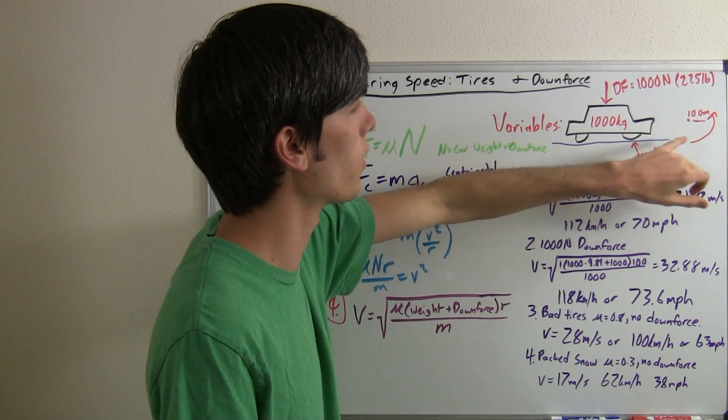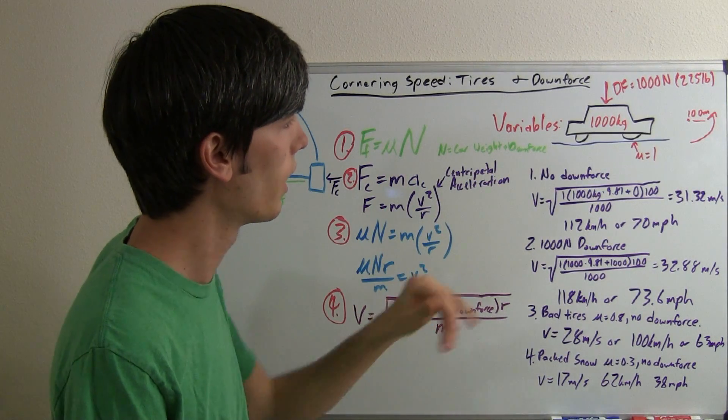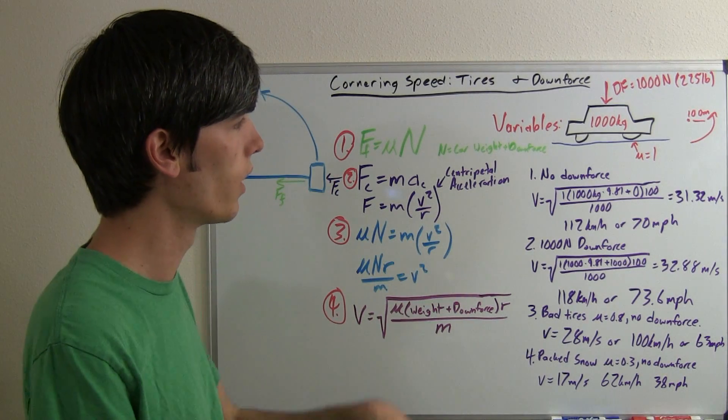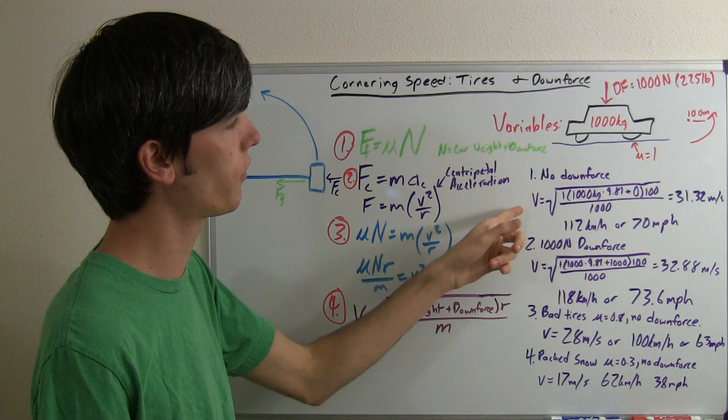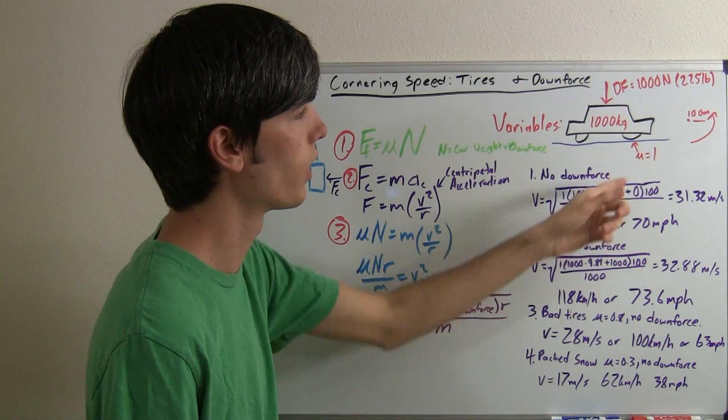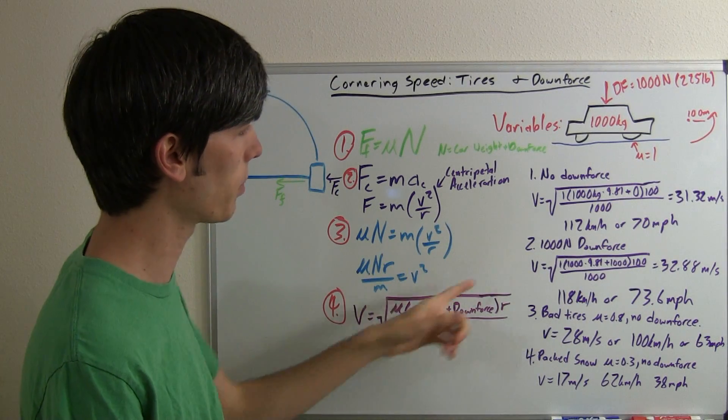So this is going to be going around a 100 meter turn, about 330 feet. And then, so the 1000 kilogram car, that's about 2200 pounds. So first, let's see how fast this car can go around the corner at 100 meters with coefficient of friction of one and no downforce. So we're going to plug in our variables.